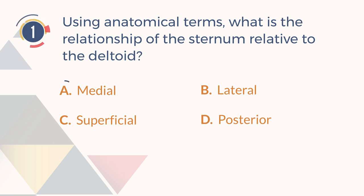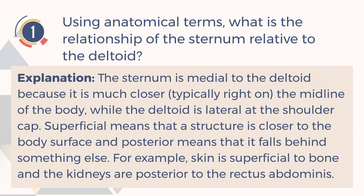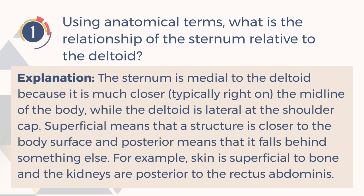The correct answer is A. Medial. Explanation: The sternum is medial to the deltoid because it is much closer, typically right on the midline of the body, while the deltoid is lateral at the shoulder cap. Superficial means that a structure is closer to the body surface, and posterior means that it falls behind something else. For example, skin is superficial to bone and the kidneys are posterior to the rectus abdominis.